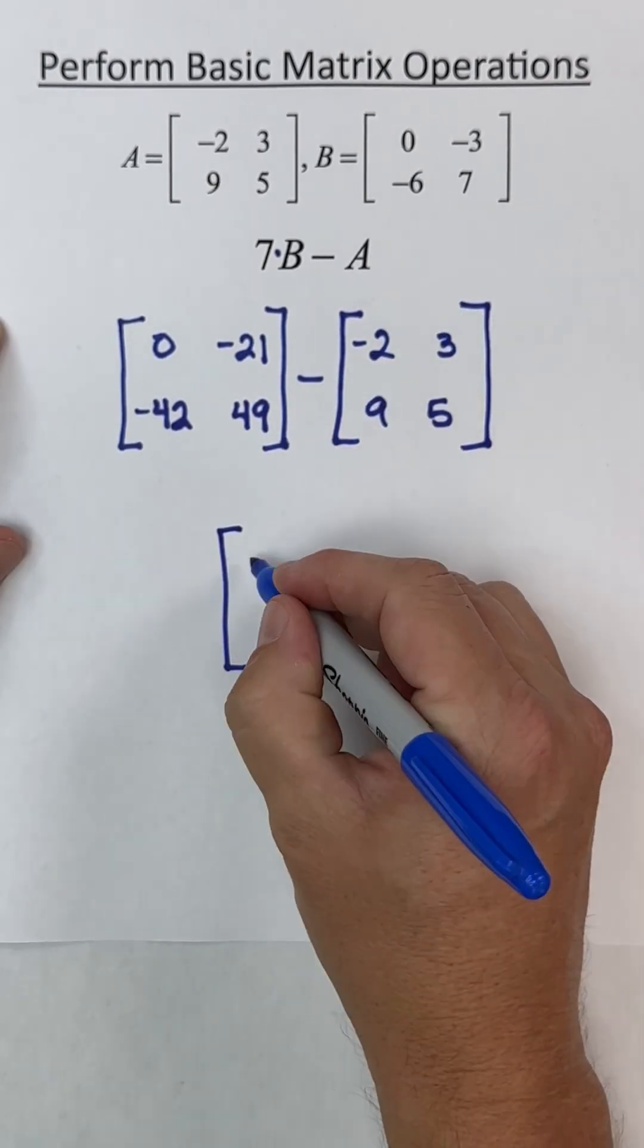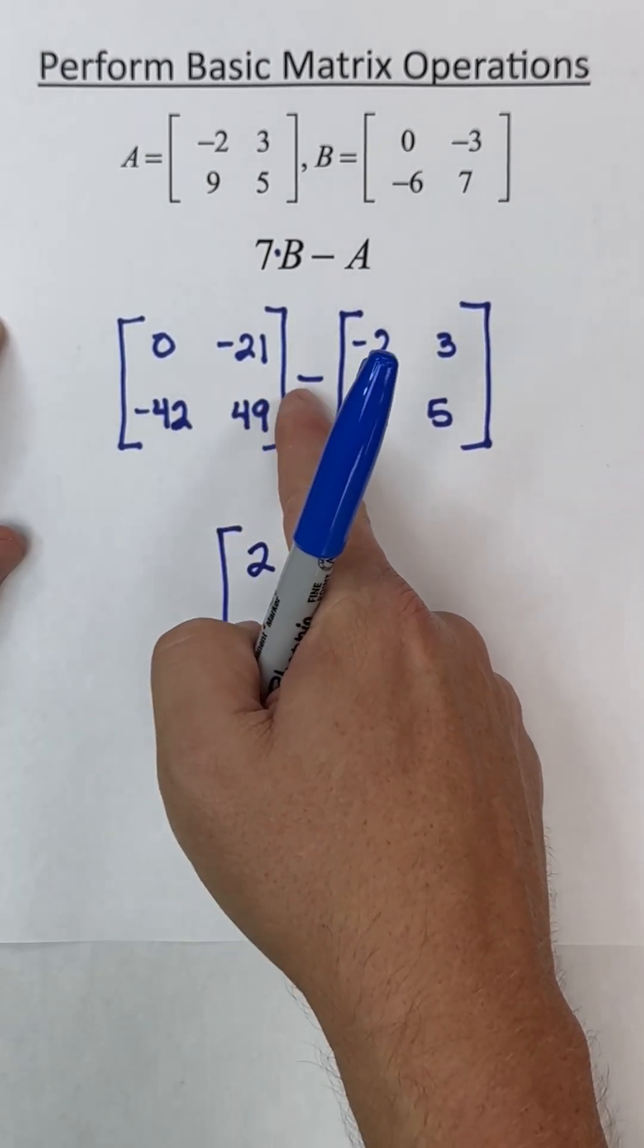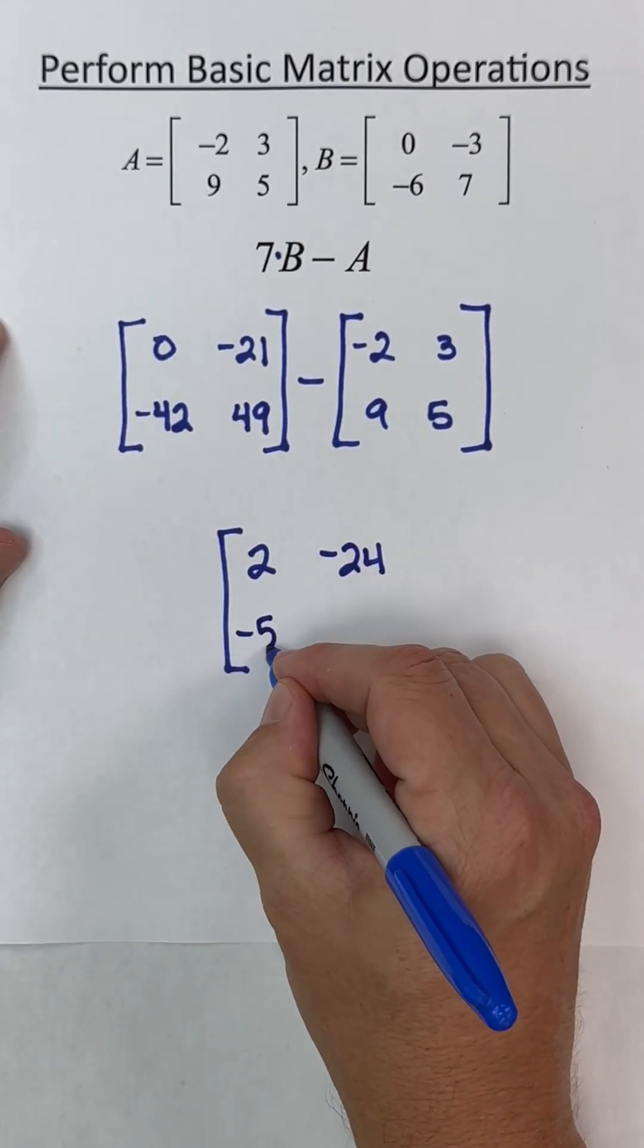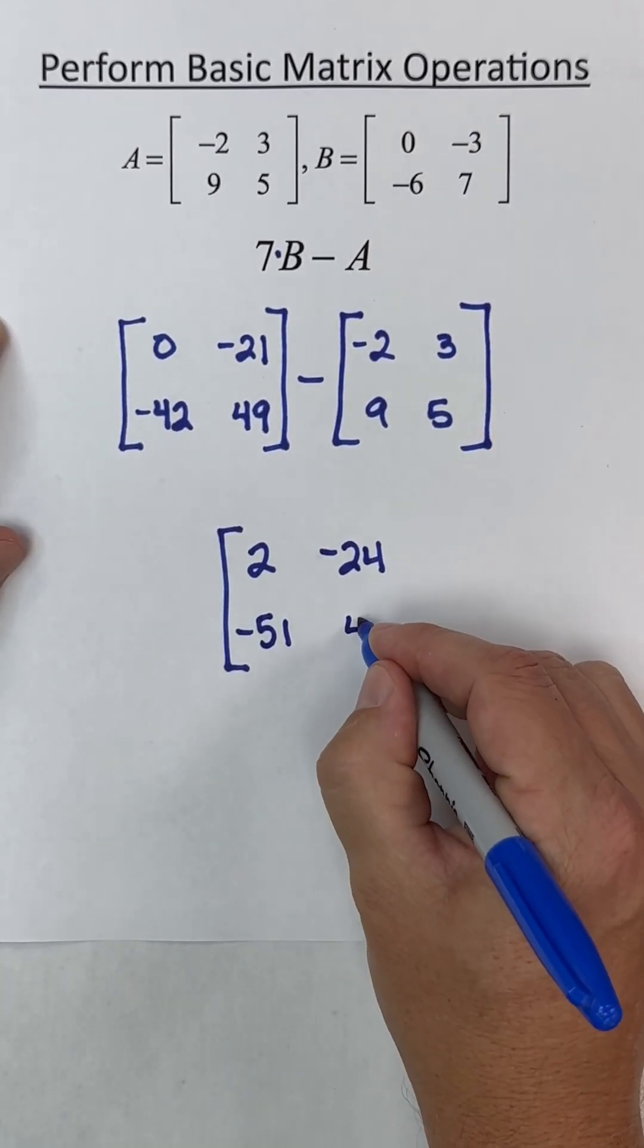0 minus negative 2 is positive 2. Negative 21 minus 3 is negative 24. Across the bottom, we get negative 51 and 44.